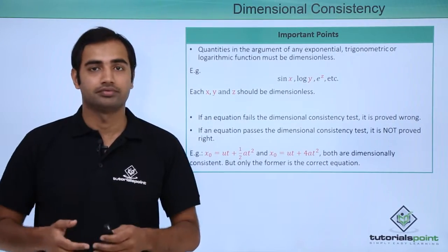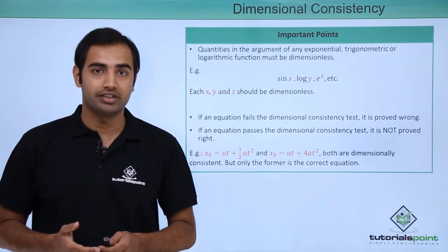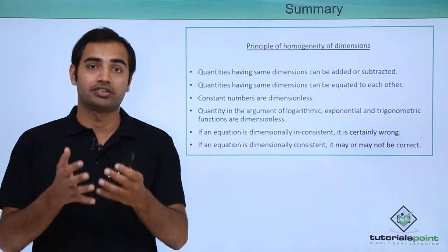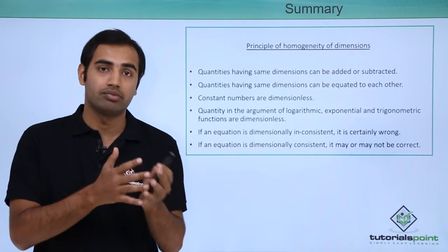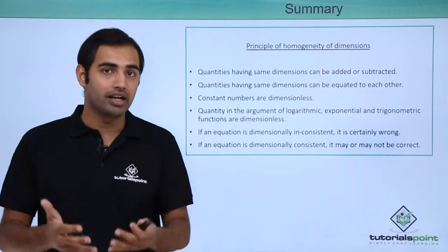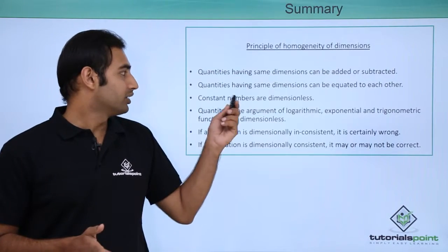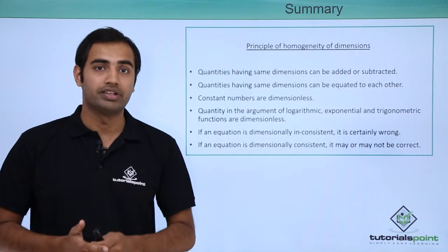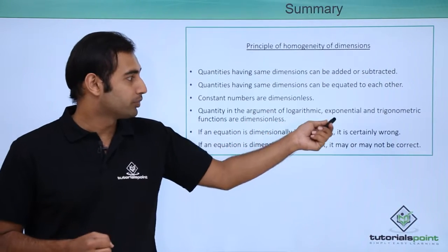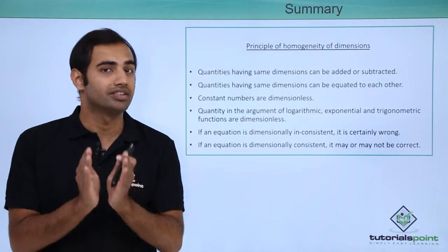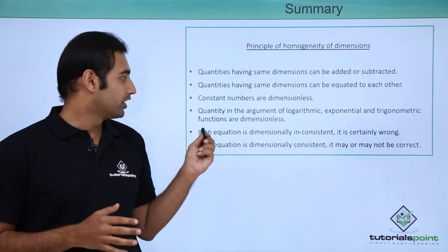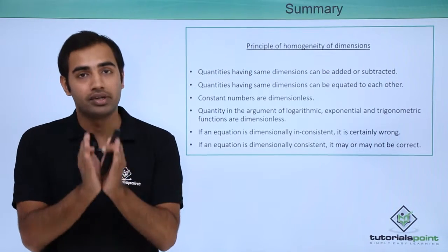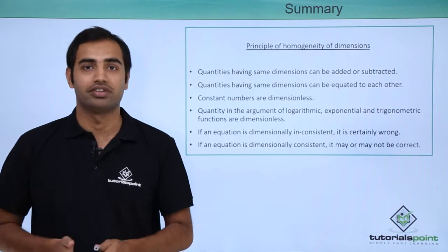Summarizing what we just learnt: the principle of homogeneity of dimensions states that quantities having the same dimensions can be added, subtracted, and equated to each other. Constant numbers are dimensionless. Quantities in the argument of logarithmic, exponential, and trigonometric functions must be dimensionless. If an equation is dimensionally inconsistent, it is clearly wrong. If an equation is dimensionally consistent, it may or may not be right - we have to inquire further. I hope these ideas are very clear. Thank you.